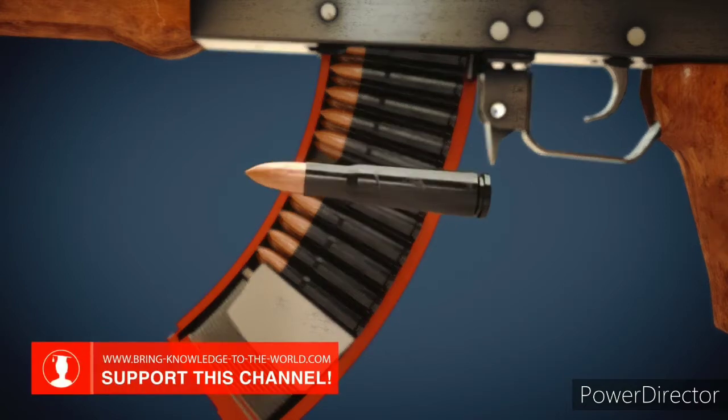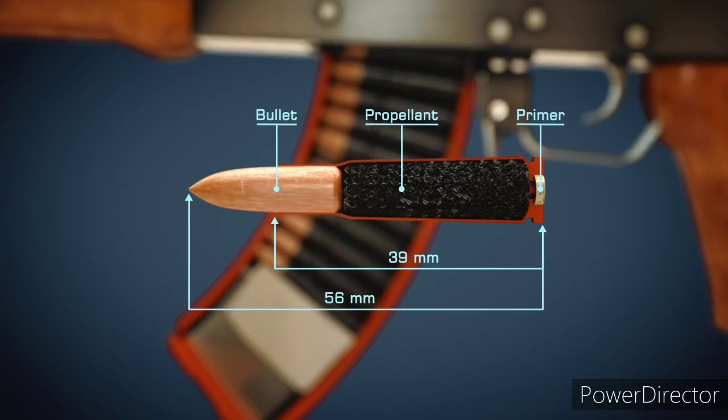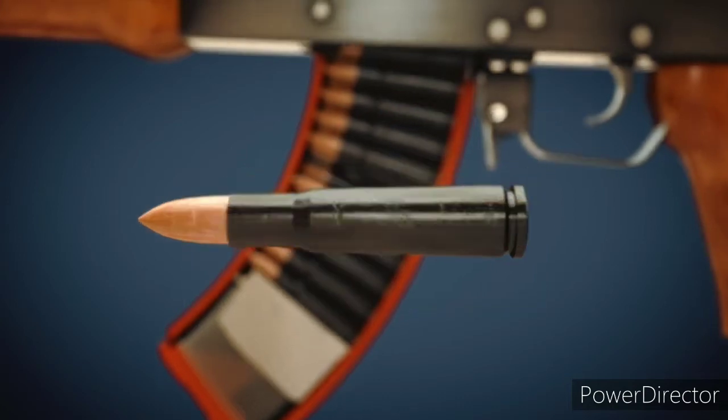Originally, the AK-47 used M43 cartridges equipped with burden primers. Detailed information on cartridges can be found in the corresponding animation in this channel.